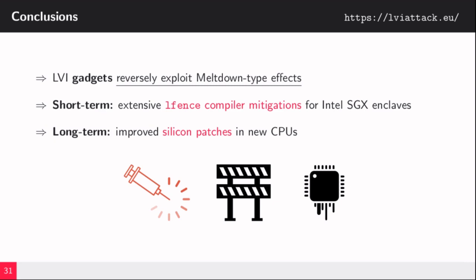In summary, we presented LVI, a novel gadget-driven technique to reversely exploit Meltdown-type effects. On the short term, LVI really necessitates extensive LFence compiler mitigations, at least for Intel SGX enclaves. We also discussed a bit of non-SGX impact in the paper, but that remains mainly academic for now. On the longer term, we believe that LVI really underlines the importance of improved silicon-level mitigations for newer CPUs. That's a tendency that's already going on. And then finally, we refer to our website LVIattack.eu for more information.